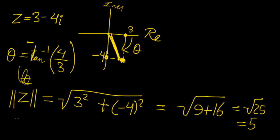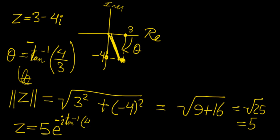So if we wanted to express this in exponential form — which is called the polar form — we would write 5 e to the power of i times negative arctan(4/3). That's the polar form of the complex number. In the next video, we're going to see how to perform algebraic operations on complex numbers using this definition.